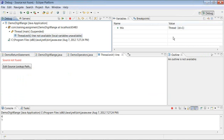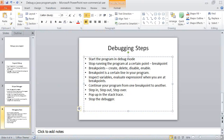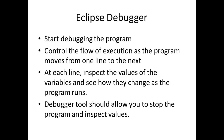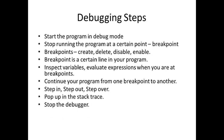Let's review what a debugger does. A 'bug' is a logical error in your program, 'debug' is the process of finding and fixing that error, and a 'debugger' is a tool that helps a developer debug code that contains a logical error. Eclipse provides a built-in debugger, and inside Eclipse you can start debugging a program and control the flow of execution as it moves from line to line.